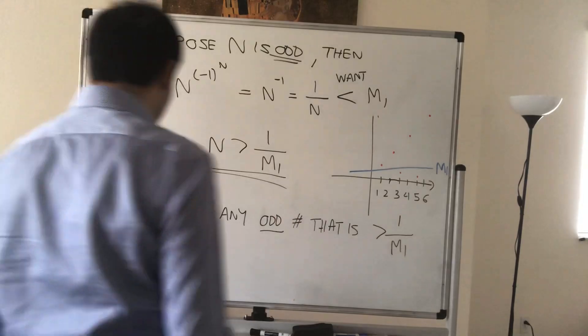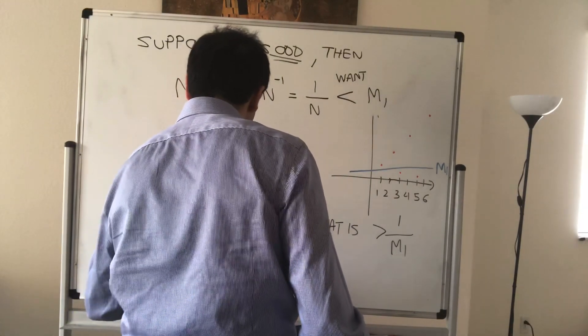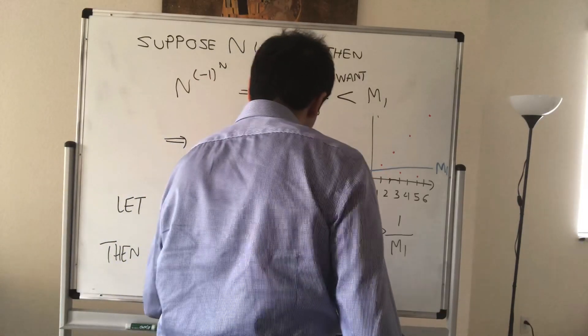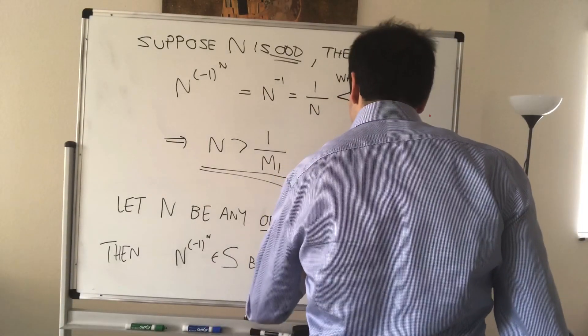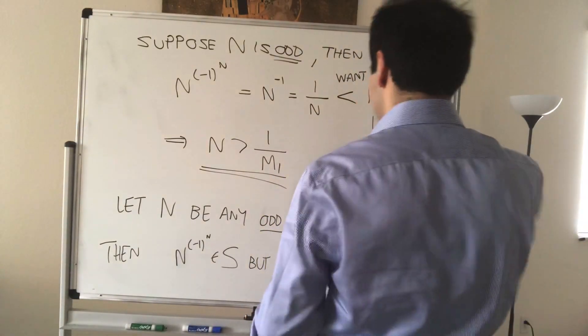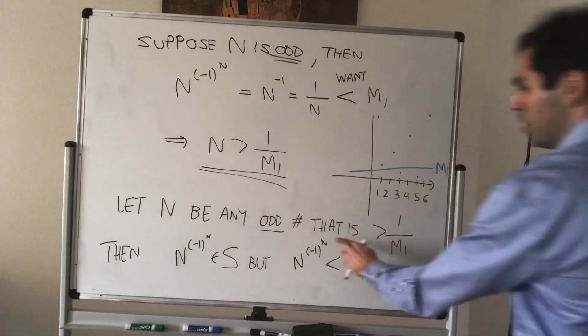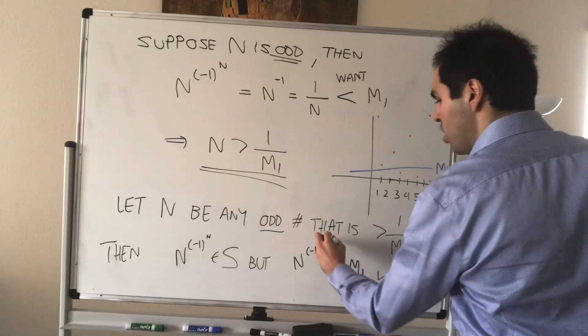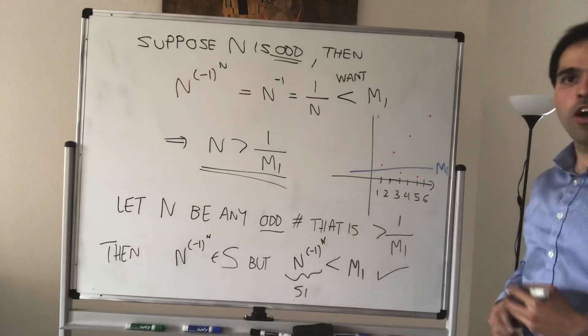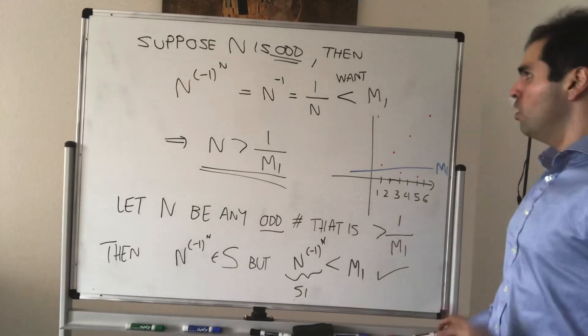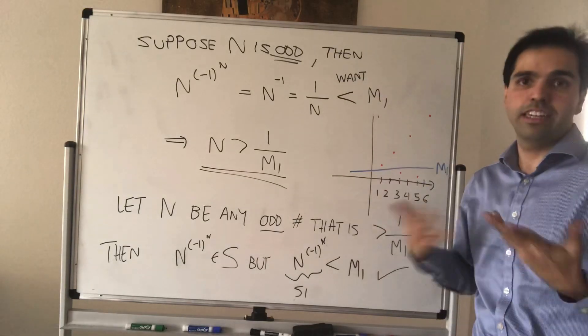Then, with that number, my N to the minus 1 to the N is in S. But, we just saw that N to the minus 1 to the N is less than M1. And that's precisely what you want. In other words, you want some element, let's call this S1, in your set that is smaller than M1. So, by definition of infimum, you have shown that the infimum of your set is 0.